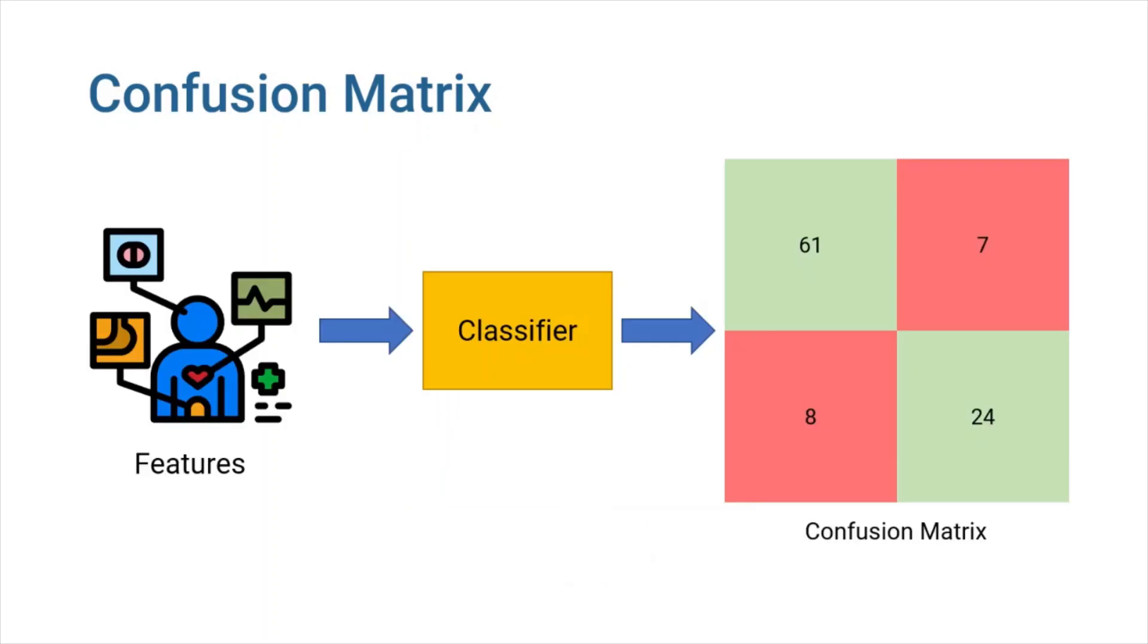For example, if a hundred people take our pregnancy test, we would like our confusion matrix to be more like this. Notice that values on the green tiles are much bigger than the values on red tiles, meaning that most of the test results are actually correct.